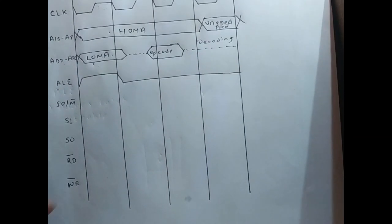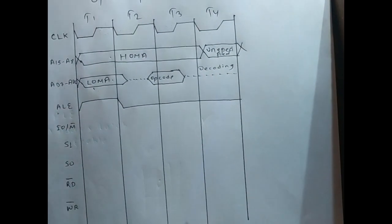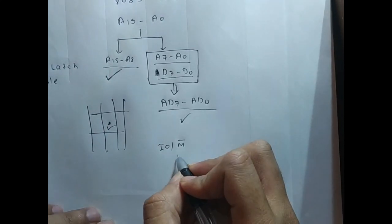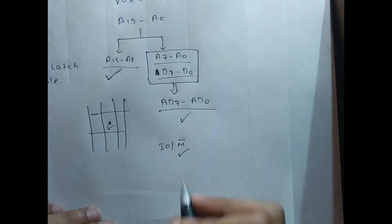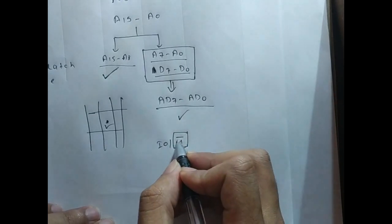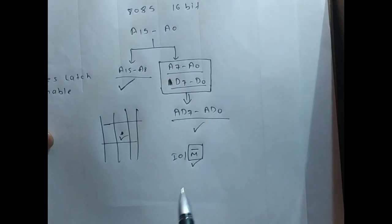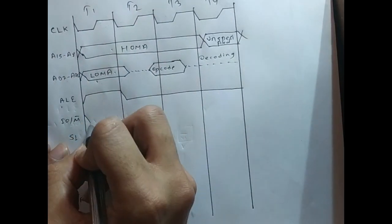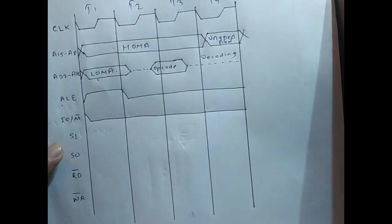Now let's look at the lower part of the timing diagram. Our opcode is present in the memory location, so for the IO/M̄ signal — since our opcode is in memory, our operation will be a memory operation. IO/M̄ is an active low signal, so we make it low to indicate a memory operation. We keep it low throughout all 4 T-states.